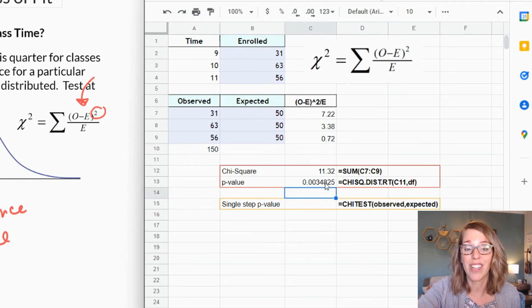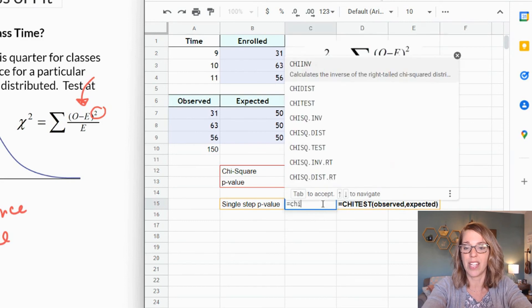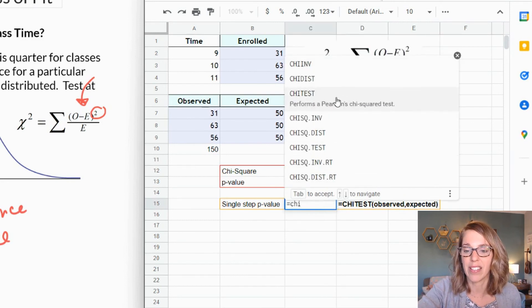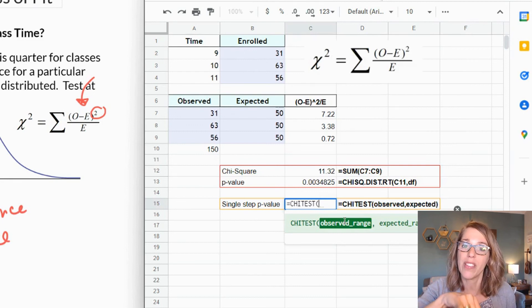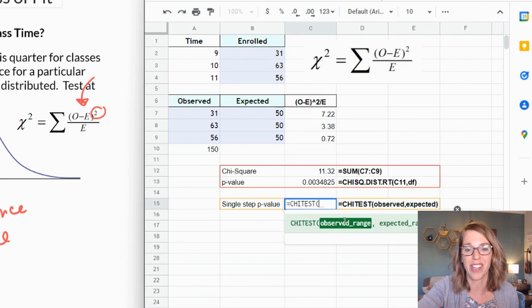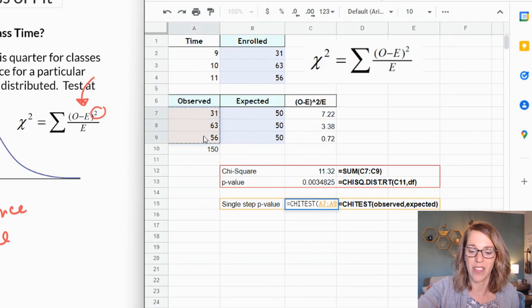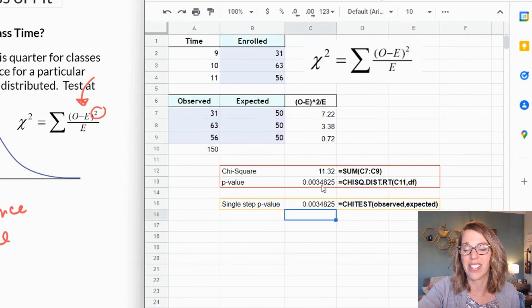And saying that there is a significant difference or a preference. Now the single step is really nice if you don't need the chi-square statistic and you just need that p-value. To do this one, I'm going to go equals CHISQ.TEST, so CHI and I'm looking for that just CHISQ.TEST. It needs just the observed and expected. So if you're doing it this way, you don't need to do any of the other calculations. I'm going to grab the observed, so I'm going to click, drag, click, hold and drag, and then comma, click, hold and drag over my expected, and then enter. So I get the same exact p-value.